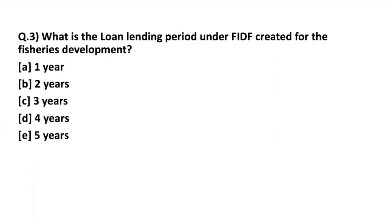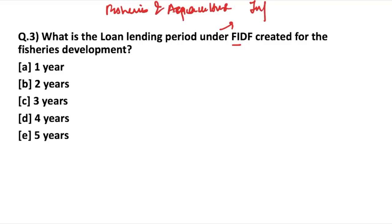Moving on to the next question: what is the loan lending period under the FIDF created for fishery development? First, you need to know what FIDF is. FIDF stands for Fisheries and Aquaculture Infrastructure Development Fund, set up by the Department of Fisheries, which comes under the Ministry of Agriculture and Farmers Welfare.